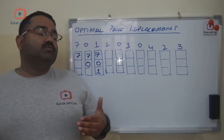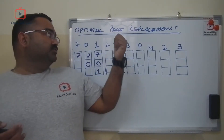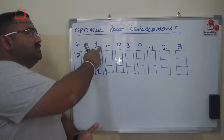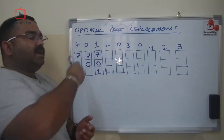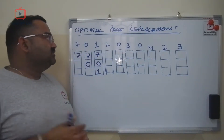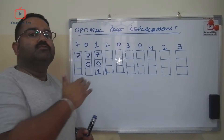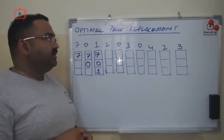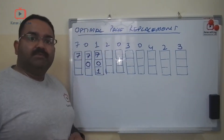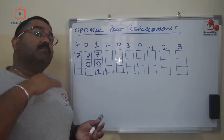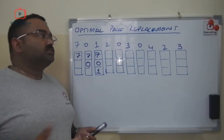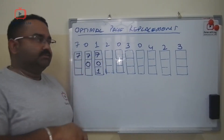In LRU, what we used to do is we used to replace the page — we used to look back and select the page which we did not use for the longest time. Now in optimal page replacement, it is the opposite of LRU. We will discuss how it works.